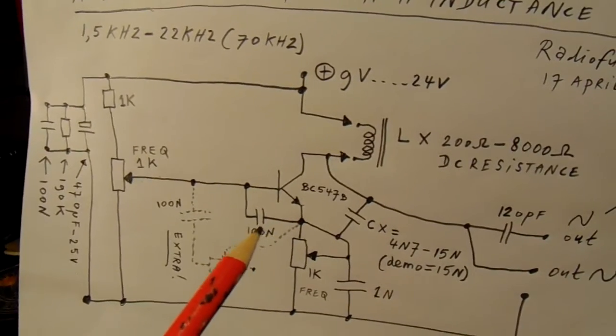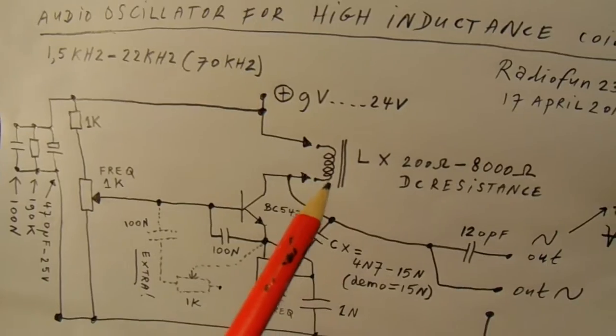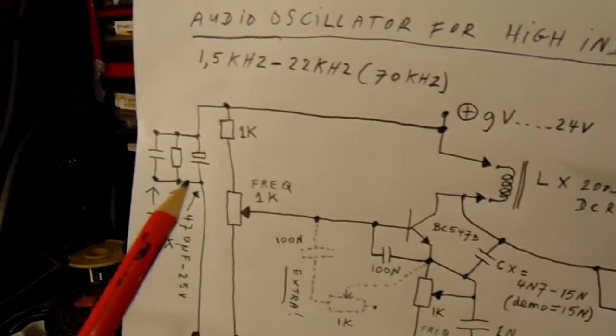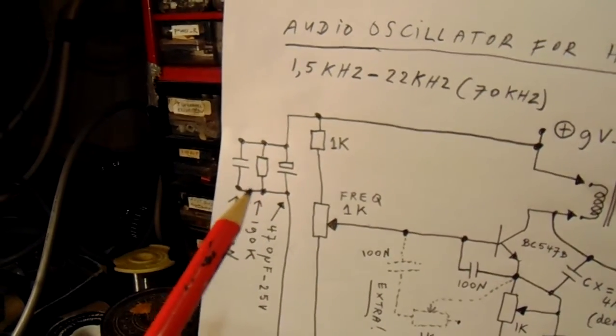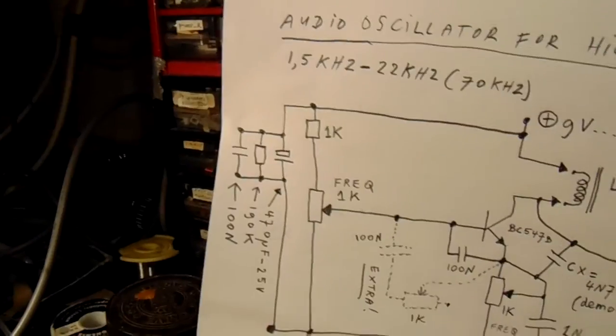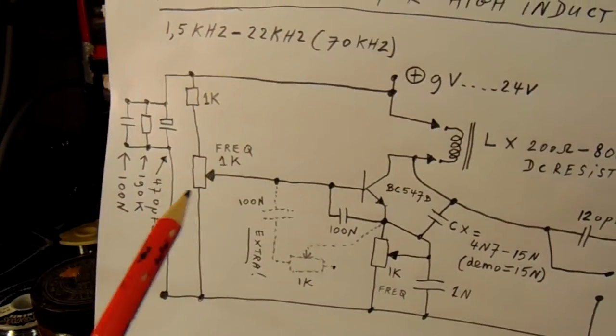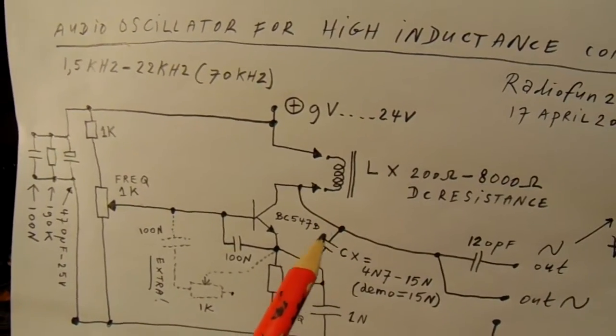Here the transistor, emitter resistor, here the high inductance coil, decoupling unit, 470 microfarad, approximately 100k, 100 nanofarad here, and with both potentiometers you can set the high inductance coil to oscillate.